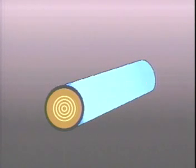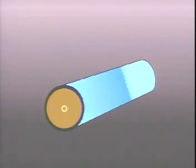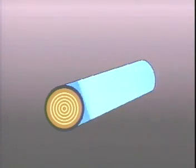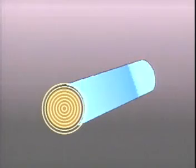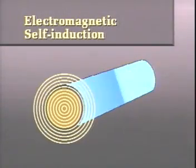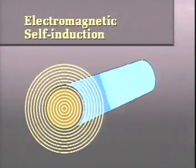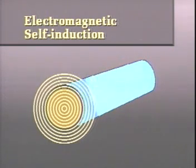Flux lines moving through a conductor is the essential requirement for electromagnetic induction. However, unlike normal induction, this kind of induction occurs on its own without the action of an external magnetic field. For this reason, it is called electromagnetic self-induction.